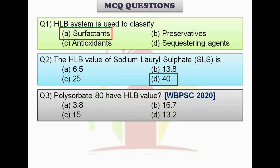Question 3: Polysorbate 80, or Tween 80, has an HLB value of — option A: 3.8, option B: 16.7, option C: 15, option D: 13.2. This question appeared in this year's West Bengal Pharmacist exam, making it an important topic for future exams as well. Pause the video and try to answer. The correct answer is option C: 15.